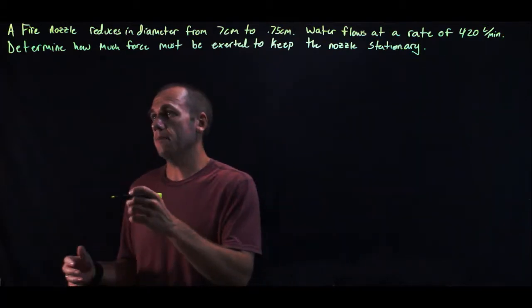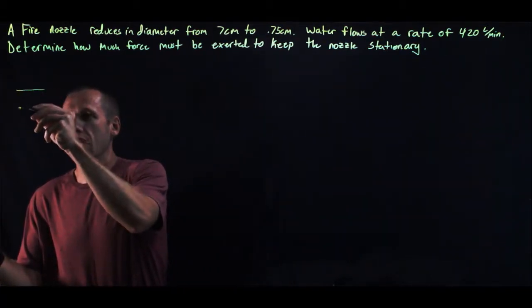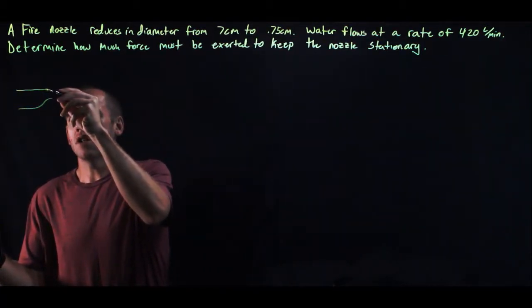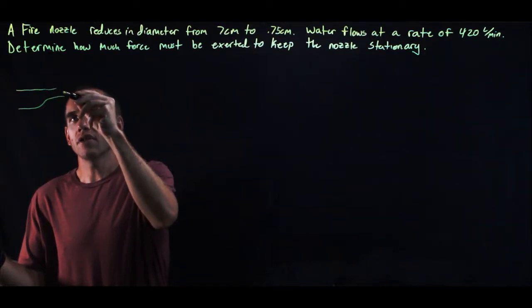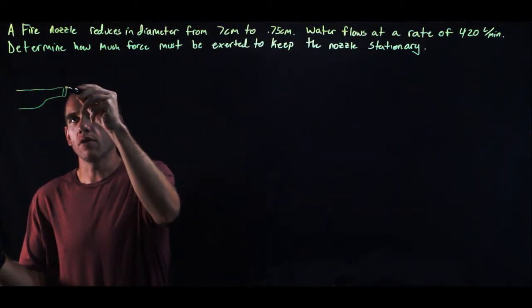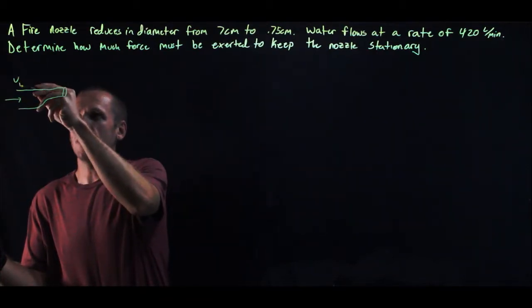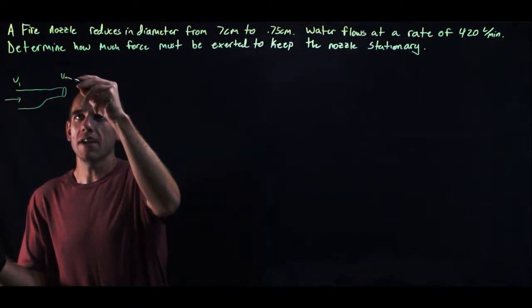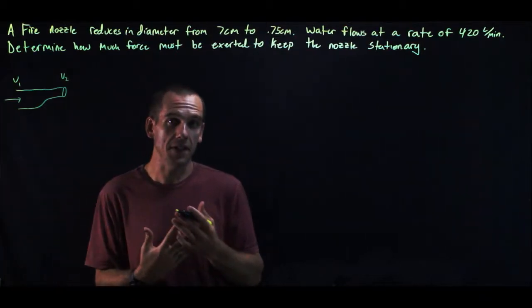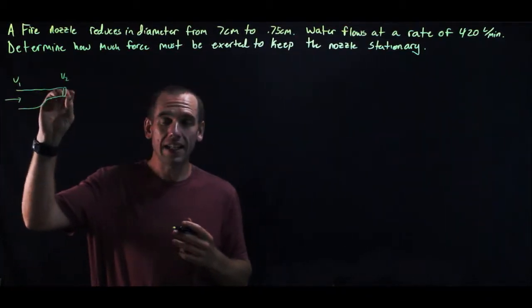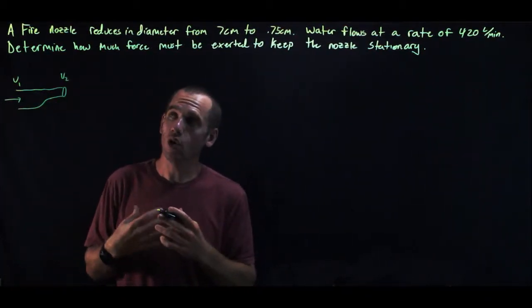So basically what's happening is we've got a fire hose and it narrows to the nozzle, and the nozzle is quite a bit narrower than the fire hose. As the water moves through here it's initially moving with some velocity v1 and when it comes out it's moving with some final velocity v2. Since it got a whole lot narrower the velocity had to get a whole lot higher.